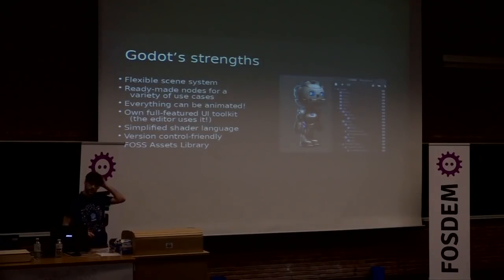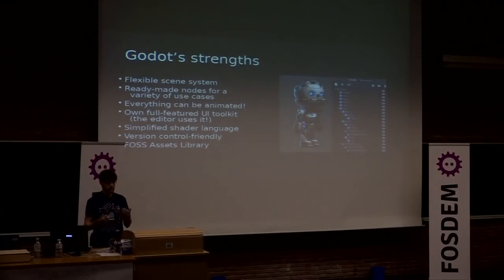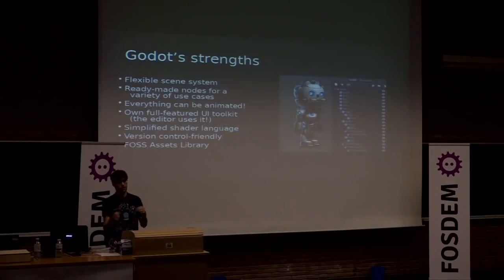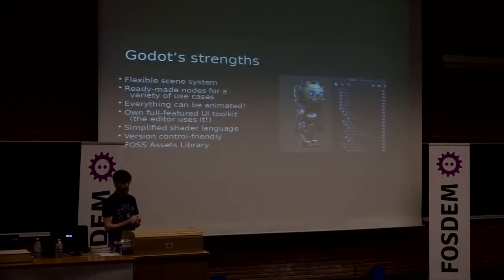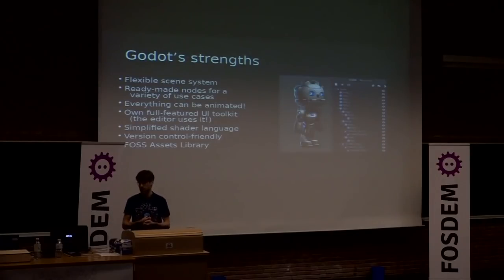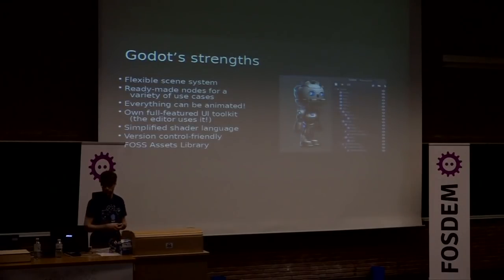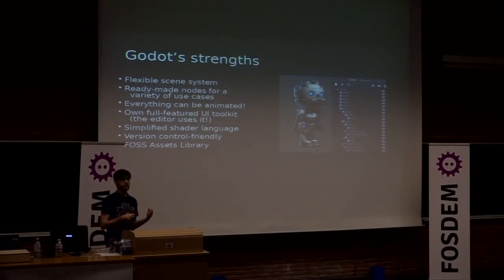Everything can be animated — anything that has a property, you can animate it. You can move stuff, but also do things beyond just visual changes, like decide to play a sound or stop an animation. Godot has its own full-featured UI toolkit to create GUIs in your games, and the Godot editor itself uses it — so Godot runs on Godot. It doesn't use Qt or GTK or anything. It's fully custom, meaning we had to create a pretty decent toolkit for a good editor, and everything from this toolkit is available for your own games.